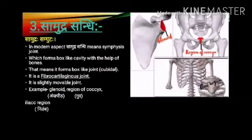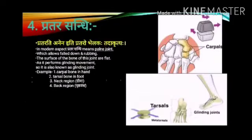Samudra Sandhi: In the modern aspect, Samudra Sandhi means symphysis joints, which form a box-like cavity with the help of bones, i.e. a cuboidal joint. It is a fibrocartilaginous joint and is slightly movable. It is present in the gluteal i.e. Anshpita region, coccyx i.e. Gudha, and the iliac region.